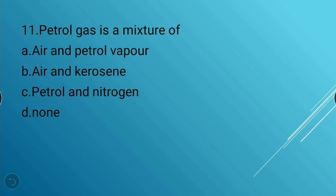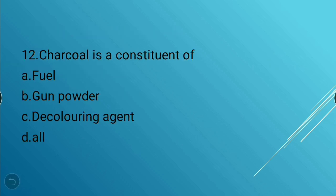Next question: Petrol gas is a mixture of — air and petrol vapor, air and kerosene, petrol and nitrogen, or none. The answer is air and petrol vapor — petrol gas is a mixture of air and petrol vapor.